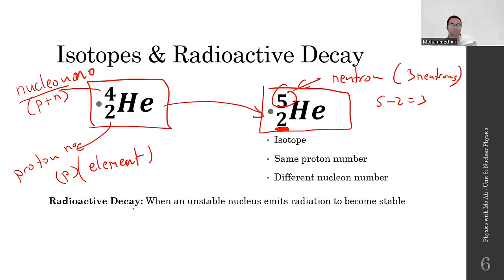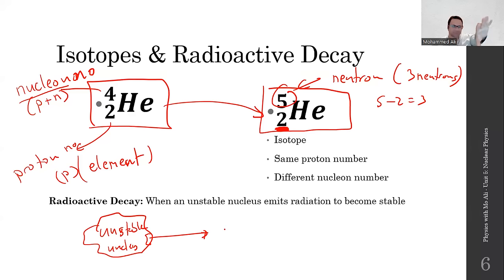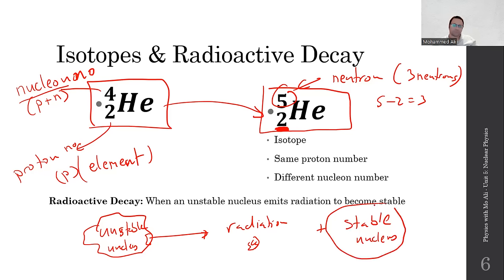What's the problem with unstable isotopes? An unstable nucleus always emits a piece of itself — called radiation — in order to become a stable nucleus. So radioactive decay is a process where an unstable nucleus emits a bit of itself, which we call radiation, to become stable. There are three different forms of radiation: alpha, beta, and gamma, which we'll now discuss.